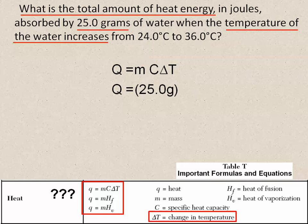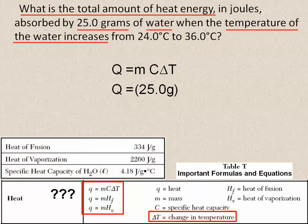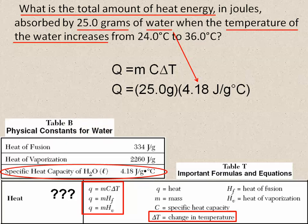Now for the C. A lot of students seem to think that one of the temperatures will go here because of the Celsius, and while that's a good thought, it's incorrect. The C refers to water, which has a specific heat capacity of 4.18 joules per gram degree Celsius, a number that could be found on Table B of the Chemistry Reference Tables.